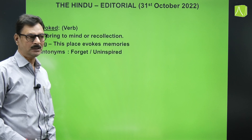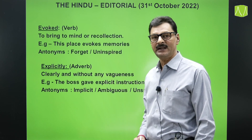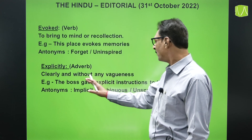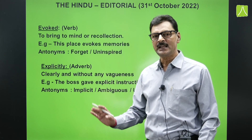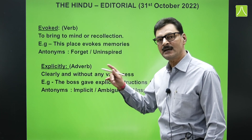The second word is 'explicitly,' used as an adverb. Its meaning is clearly and without any vagueness — something that is very, very clear. Example: 'The boss gave explicit instructions to the staff.' The antonyms are implicit, ambiguous, and unspecific. One more synonym for explicit is 'specific.'